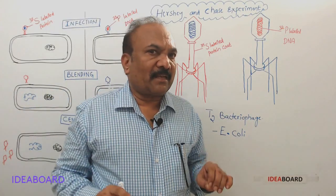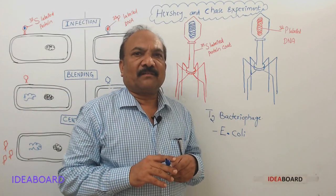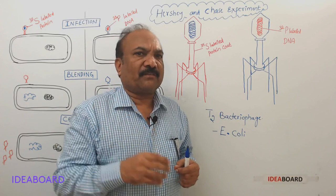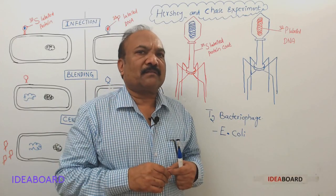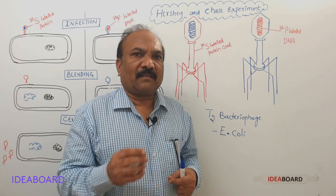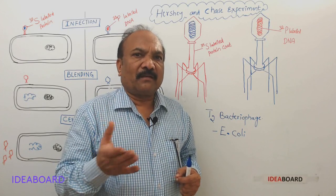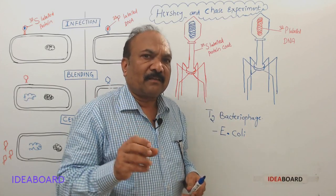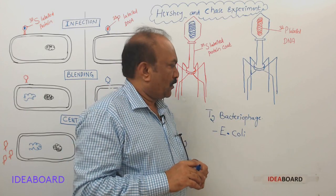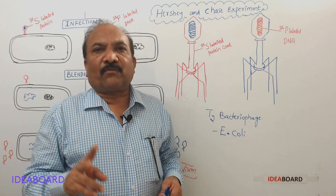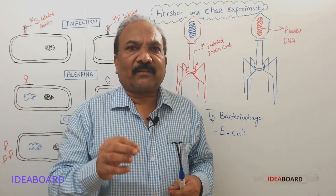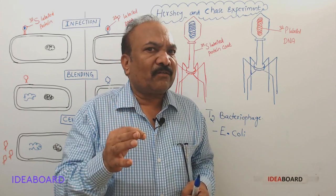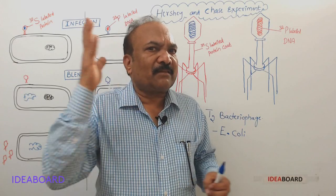They selected this bacteriophage because all viruses have only two chemicals in their structure: a protein coat called the capsid, and the genetic material, which may be DNA or RNA. Bacteriophages generally have DNA as their genetic material. Since the bacteriophage is composed of only these two chemicals, it became an ideal material to find out whether protein or DNA is the genetic material.